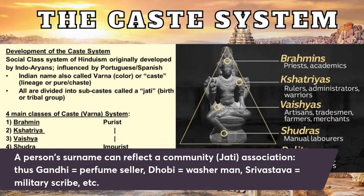'Dobi' means washerman. 'Srivastava' — military scribe — would be more of the upper class, like the Kshatriya. Those are your four castes. The highest caste is the Brahmins, connected to priests, academics, and scribes. Supposedly the belief is that these originate from the gods — Brahmin from the head or mouth of god.